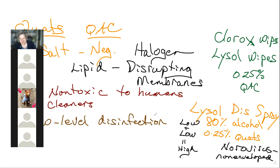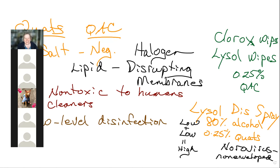Norovirus is extremely infectious because it survives in the environment. Four years ago my son inadvertently took down four different families at Thanksgiving with it, including ours. You get together, then go home and inadvertently take it to your work. It's really bad.